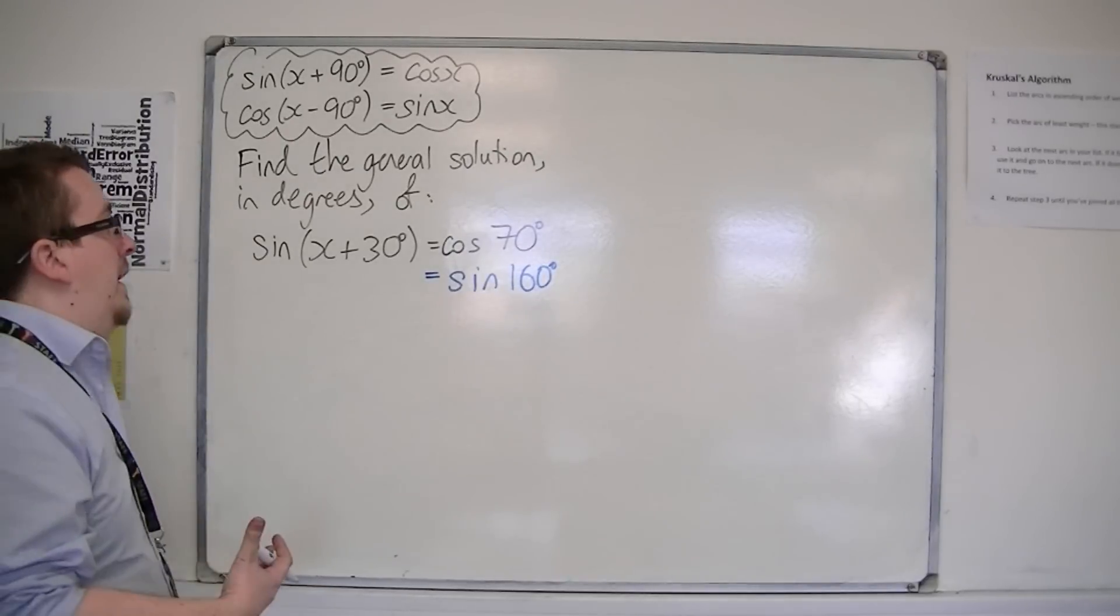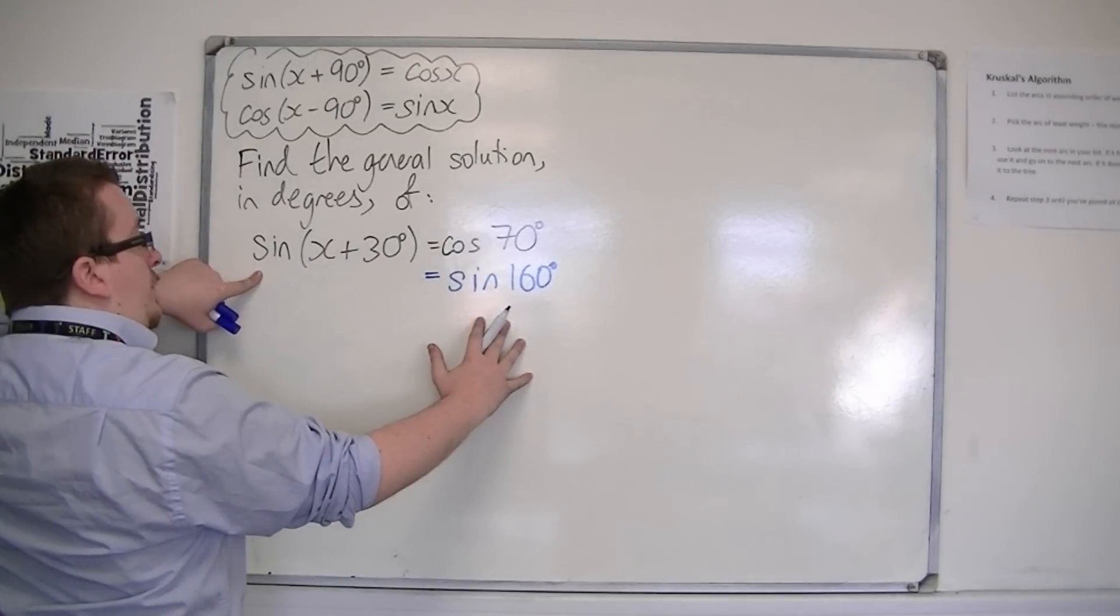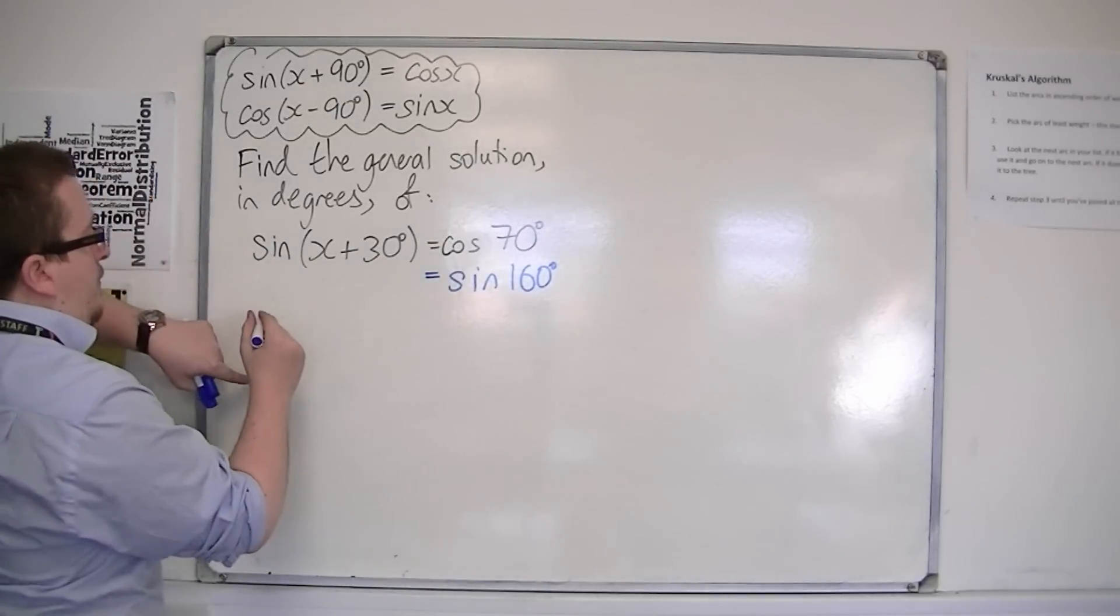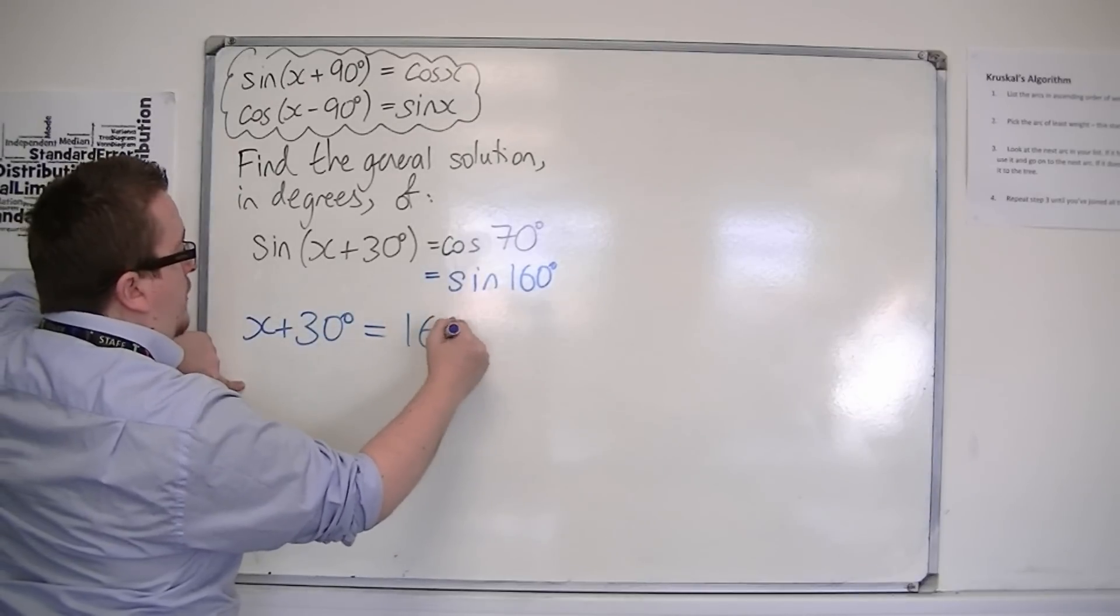And we can use that now, because if we've got sine of x plus 30 is sine of 160, then inversing sine both sides, x plus 30 must be equal to 160.